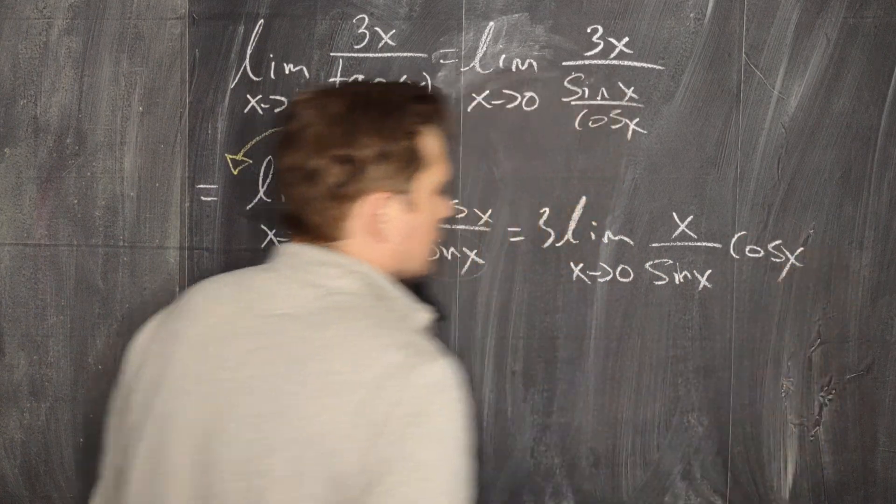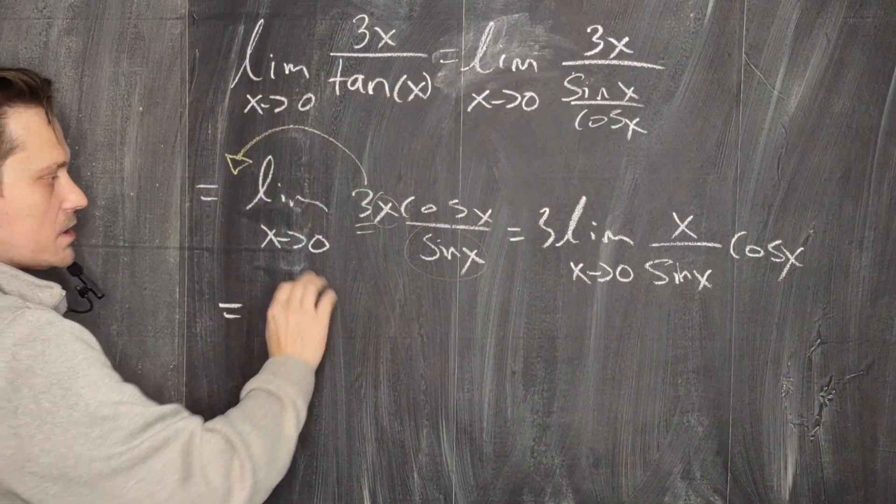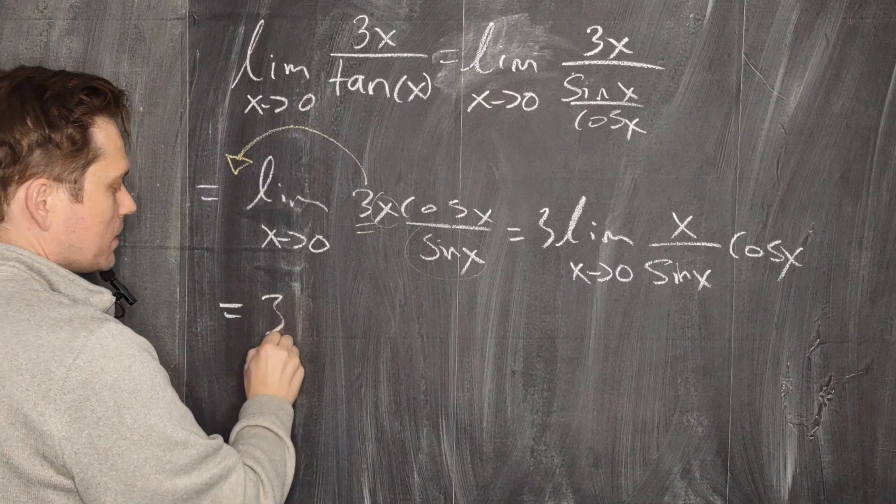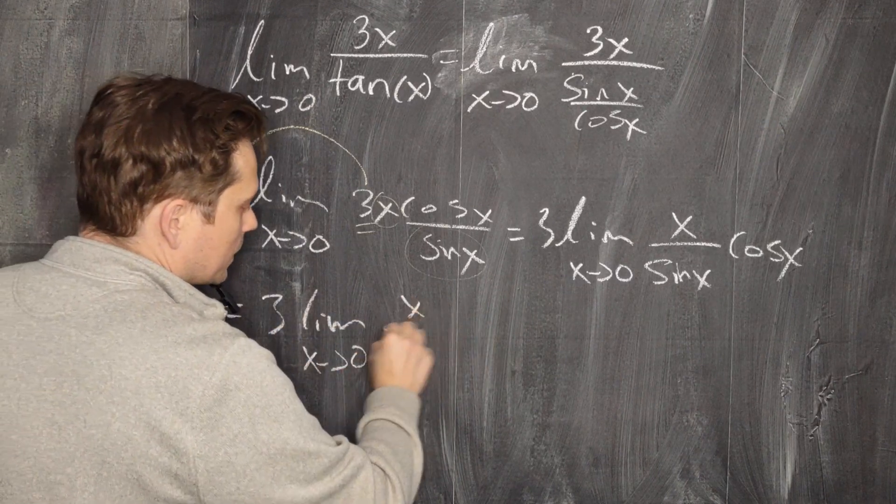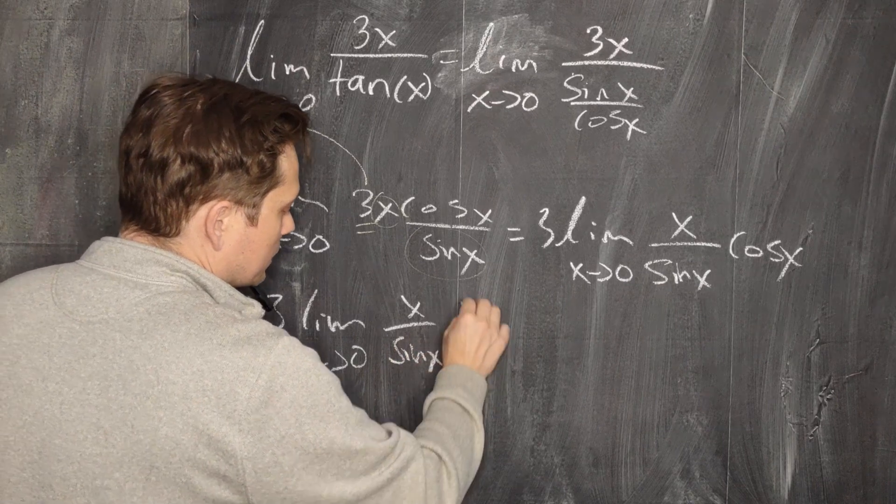And now there's a basic property of limits that allows you to distribute the limits. So it's going to be 3 times the limit as x approaches 0 of x over sine of x times the limit as x approaches 0 of cosine of x.